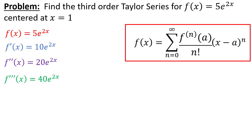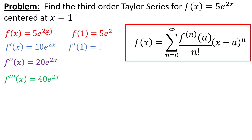So these are our first three derivatives of f of x. The next thing we're going to want to do now that we've found all these derivatives is plug in for f of a. In this case our a is going to be where we want to center it, which is at x equals one. So our a is going to be one. We find f of one by plugging in one for x, then f prime of one — we plug in one for x and get ten e squared, then f double prime of one is twenty e squared, and finally f triple prime of one is forty e squared.